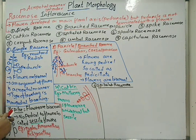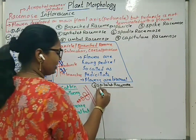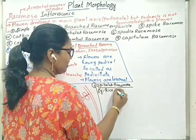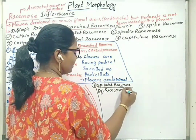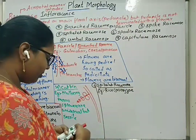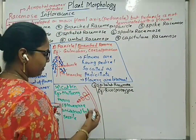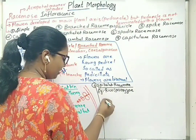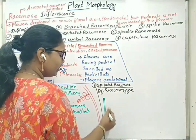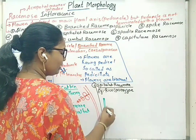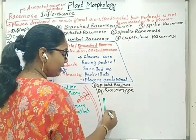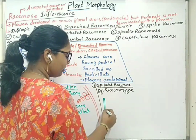Spikelet type of inflorescence is seen in case of rice and wheat. The scientific or botanical name of rice is Oryza sativa. Here, spikelet inflorescence has two types of bracts — one is sterile bracts and another one is fertile bracts.